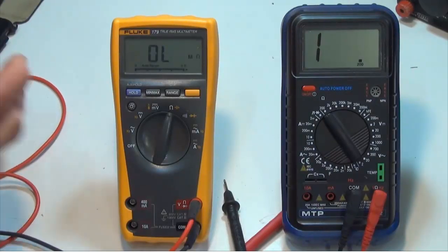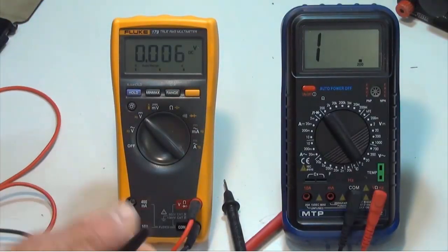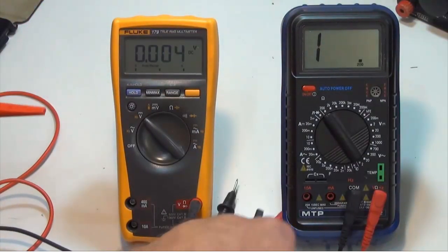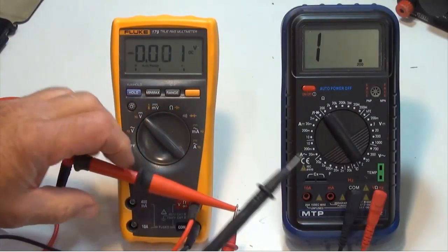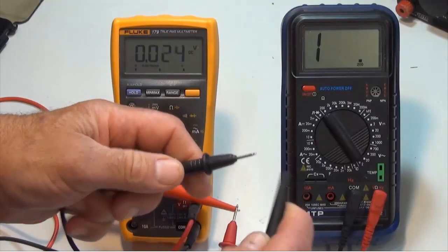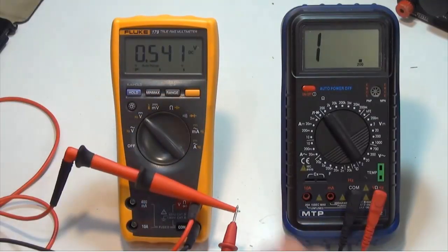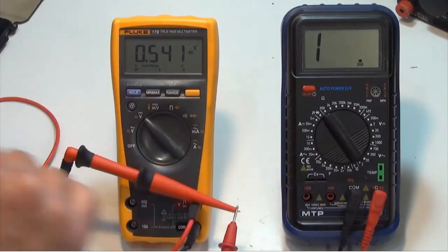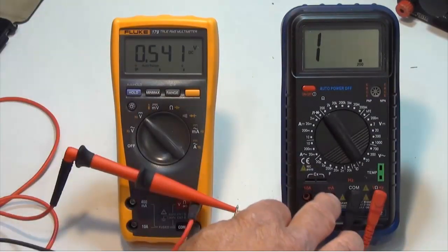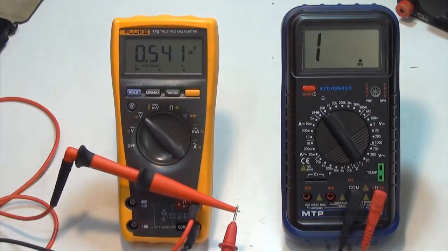Next what I'm going to do, I'm going to set the Fluke to measure voltage, and I'm going to connect the probes to the MTP meter. So red to red, and black to black. And what you'll notice on the Fluke meter, the MTP meter is actually producing 0.541 volts.